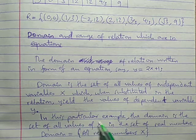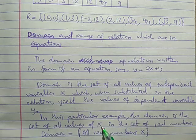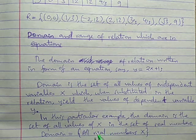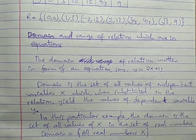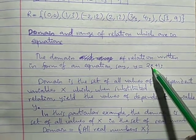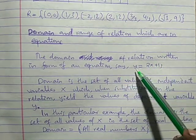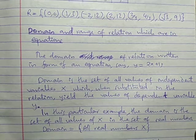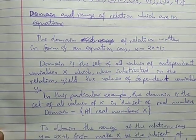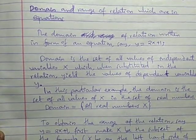But in this particular example, the domain is the set of all values of X in the set of all real numbers, kwa sababu any value of X when substituted gives a Y value — from negative infinity to positive infinity.